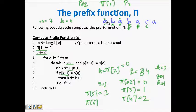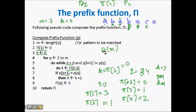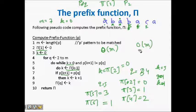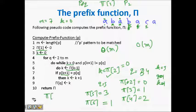With k now zero, we check p[k+1] which is 'a', and p[q] is also 'a' — they match. So π[6] becomes one. You have now computed the full prefix function, and this is a theta of m — at least O(m) — algorithm. You can compute this prefix function in O(m) time. Next, when you have computed this prefix, it will help shift the window: if something is not matching, how much should the window slide will be guided by the π vector.